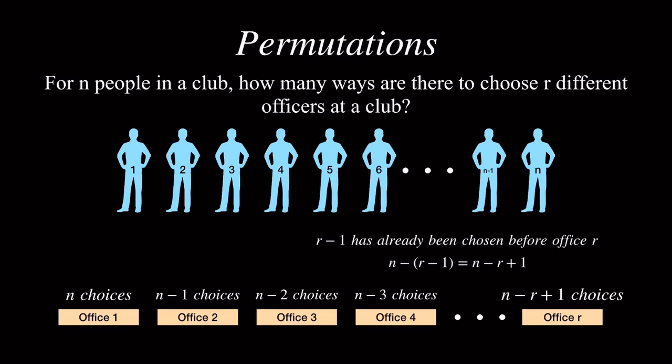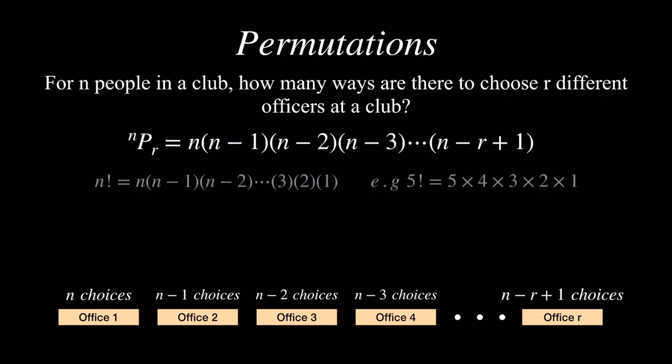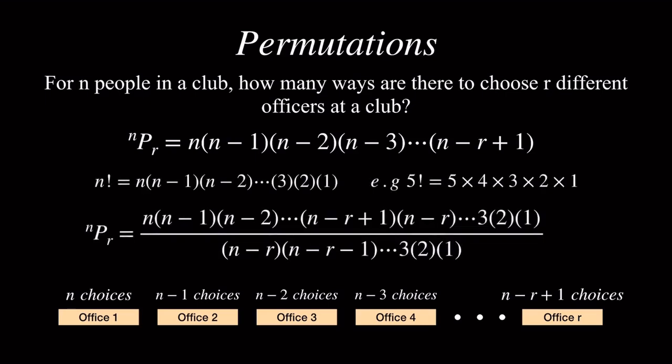To find the number of permutations, we multiply each term together. And what we get is the number of permutations of size r from a group of n objects, and is denoted as nPr, read as n permute r. We can also write this using factorials, which are defined as the product of the integer and all the integers below. Therefore, we can write nPr as n factorial over (n-r) factorial, as the (n-r) on the denominator will cancel out the rest of the terms that come after n-r plus 1.